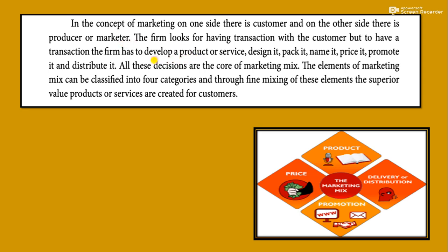First the producer will produce — that is, develop the product and service. For that, he will concentrate on its designing and packing, decide the name of that product or service, set its price, bring promotion through advertising, and then set distribution channels — whether direct distribution or indirect distribution. When all these decisions are together in the best combination, that is what we call marketing mix.